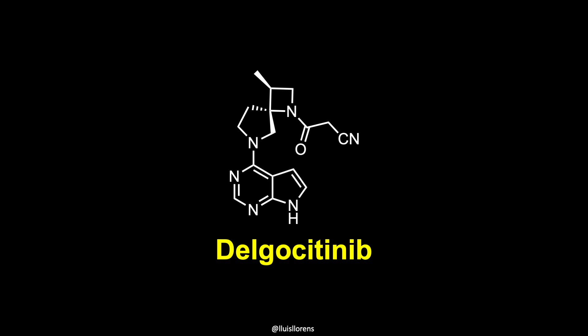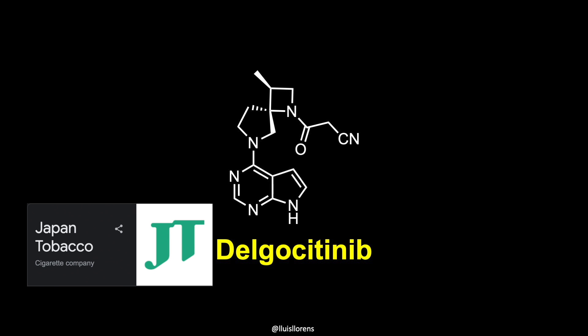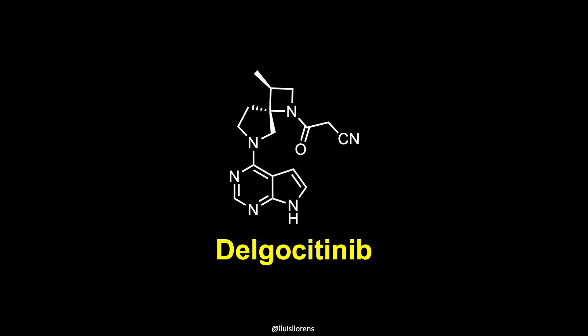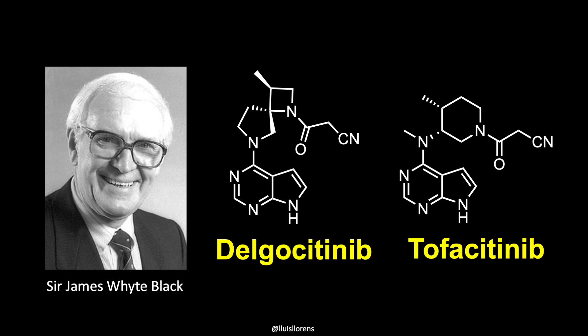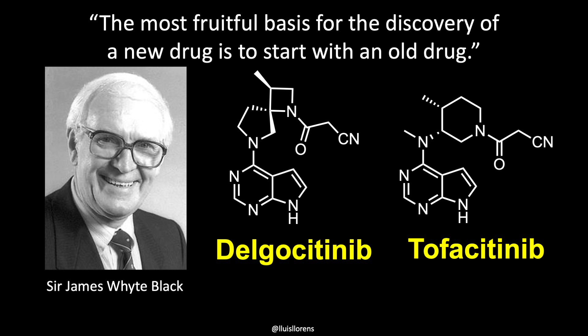Dalgocitinib is a chiral compound that was developed by Japan Tobacco. The molecule contains a stereochemically complex spirocyclic diamine scaffold attached to a pyrrolopyrimidine ring system and a cyanoacetic amide. The structure is reminiscent of several other previously approved JAK inhibitors, such as tofacitinib. This brings to mind the famous words of Sir James Black, recipient of the 1988 Nobel Prize in Medicine: "The most fruitful basis for the discovery of a new drug is to start with an old drug."